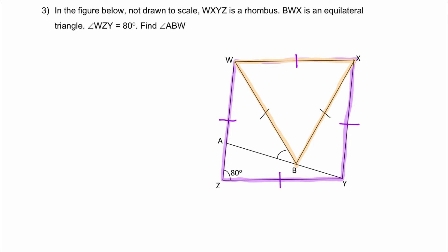BWX is an equilateral triangle. So if you have memorized the properties of equilateral triangle, this would be 60 degrees, 60 degrees, and 60 degrees. Okay, so right now let's figure out which angle is the easiest to start.